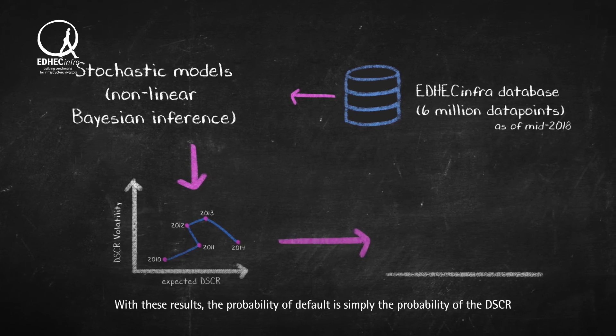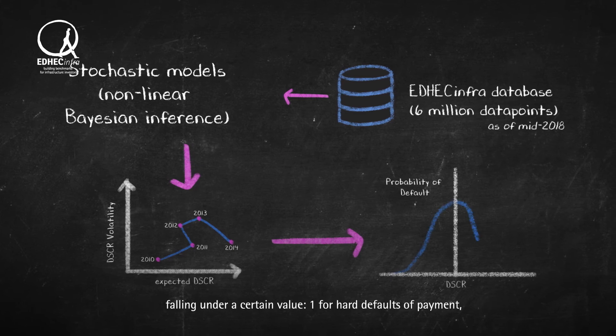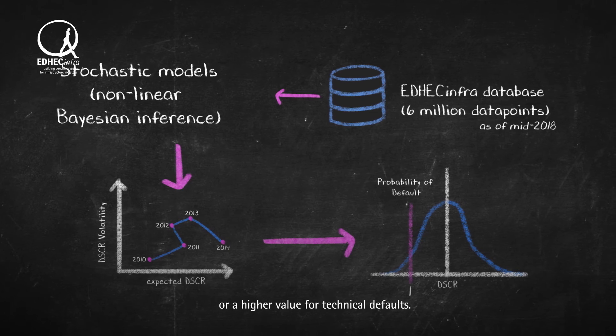With these results, the probability of default is simply the probability of the DSCR falling under a certain value, one for hard defaults of payment or a higher value for technical defaults.